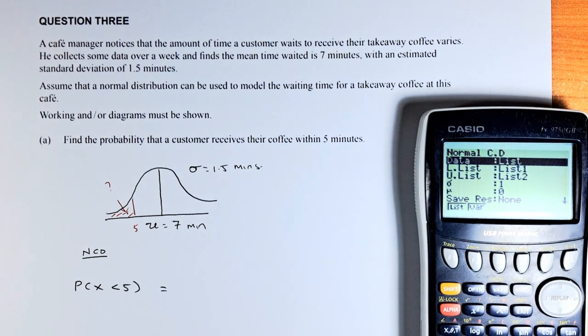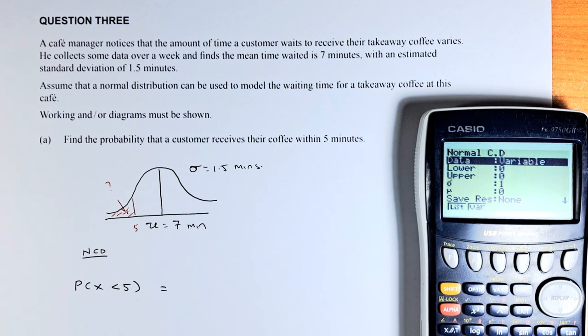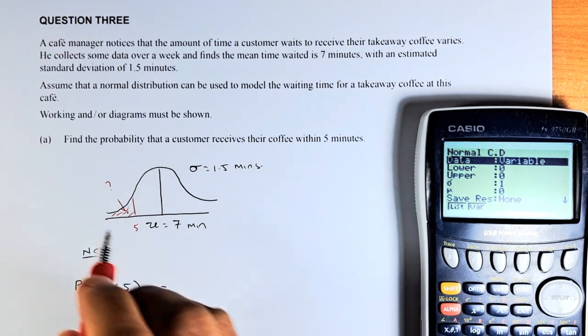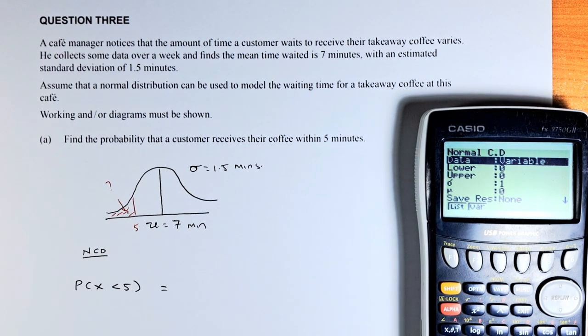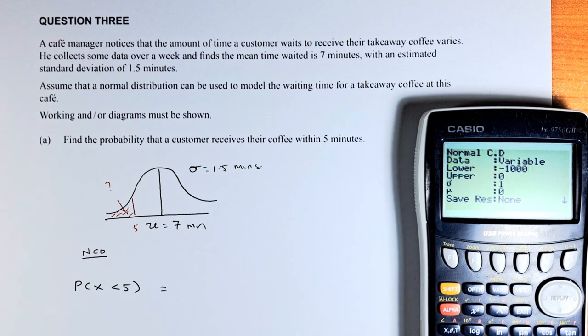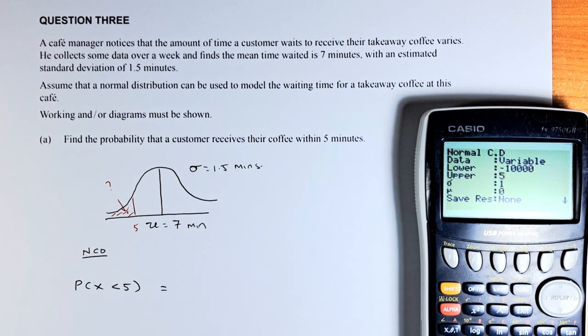Now we're going to put in the data. As usual, we need to put the variable instead of list, put variable and now we're going to key in. We're going to start from somewhere to the left. You can put any number, I would put minus 1,000 or 10,000, whatever you like. And then the upper is where it ends. Upper is going to end at 5, press 5, then execute.